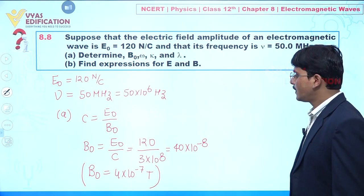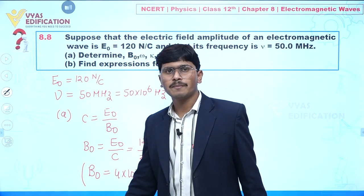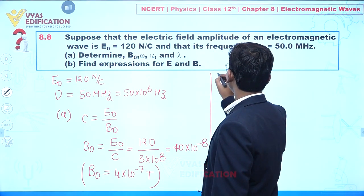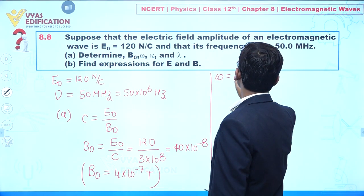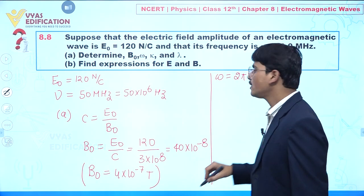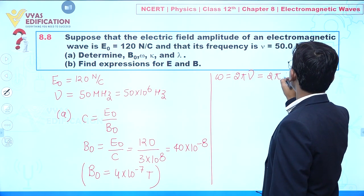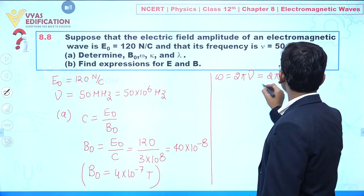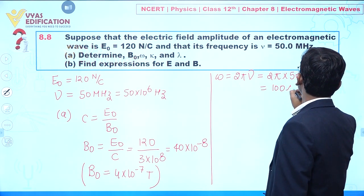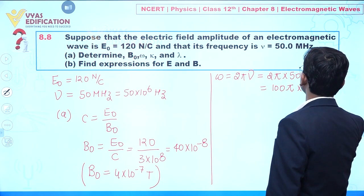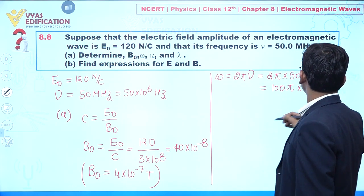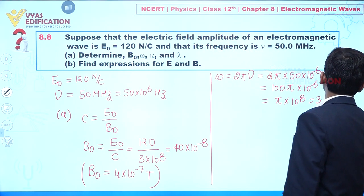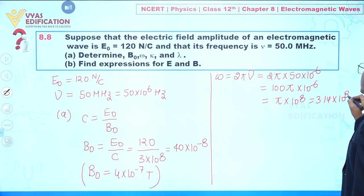The maximum value of the magnetic field is 4 × 10⁻⁷ Tesla. Now we find omega: ω = 2π × frequency = 2π × 50 × 10⁶, which equals 100π × 10⁶, or π × 10⁸, that is 3.14 × 10⁸ radians per second.